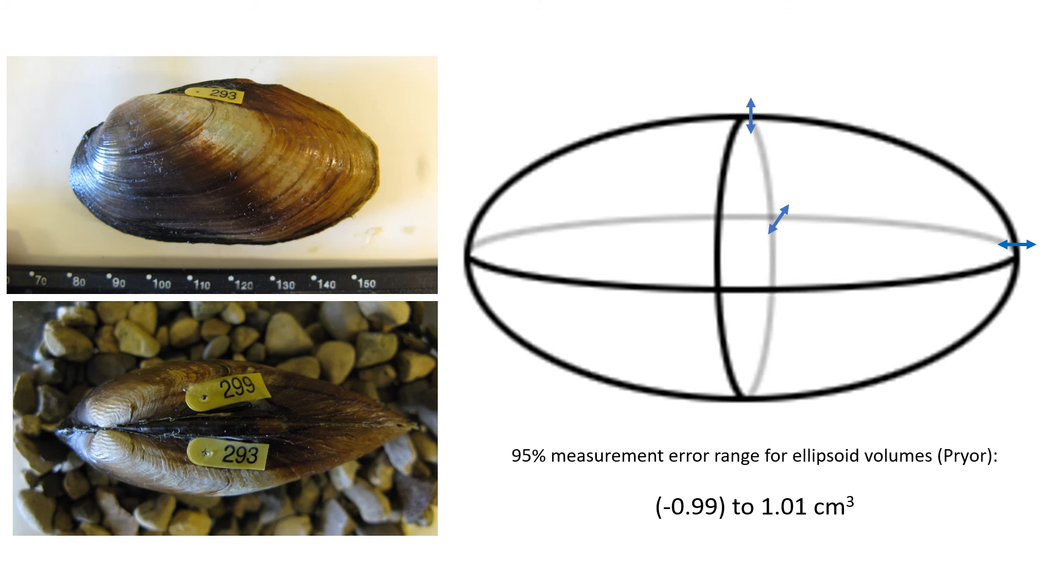And after running those numbers through Downing and Downing's method, I can say that my 95% measurement error range for ellipsoid volumes was right around plus or minus one cubic centimeter.